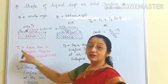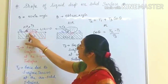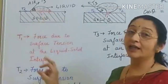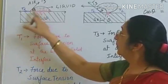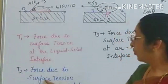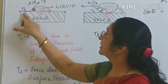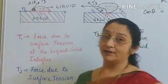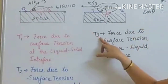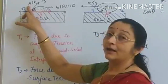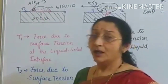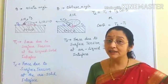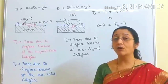T1 is the force due to surface tension at the liquid and solid interface. T2 is the force of surface tension at the solid and air interface. T3 is the force of surface tension at the air and liquid interface. Now we are going to discuss how, on the basis of T1, T2, and T3, a drop is formed on the surface of a solid.